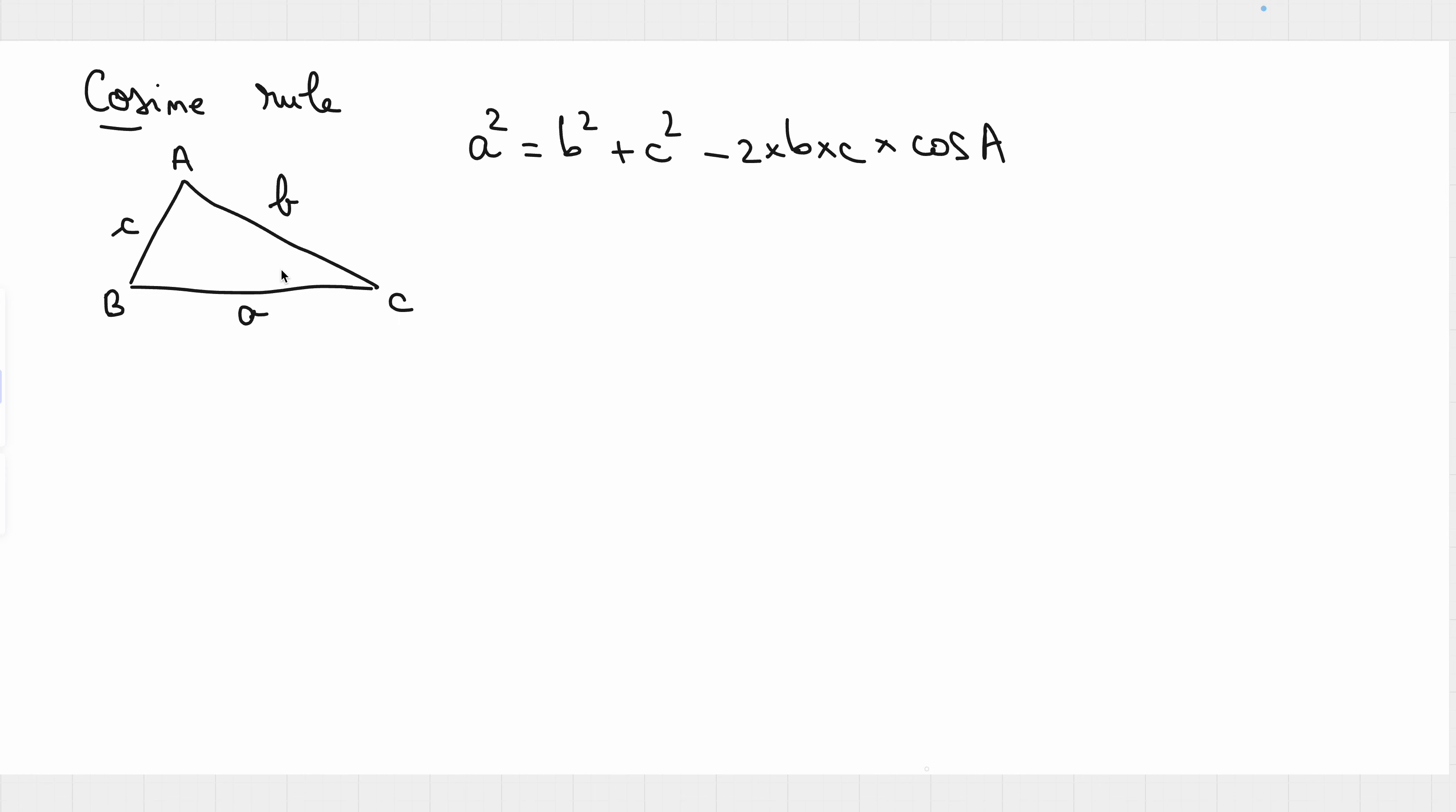If we are writing cosine rule for angle B, start with the opposing side, square it, so b squared equals this side squared plus this side squared, so c squared plus a squared or a squared plus c squared minus 2 times a times c times cosine of B.